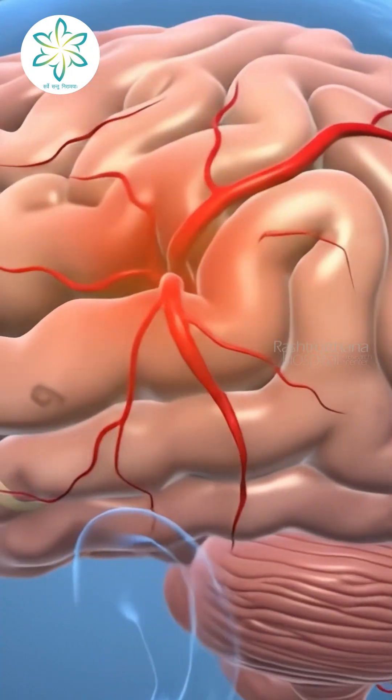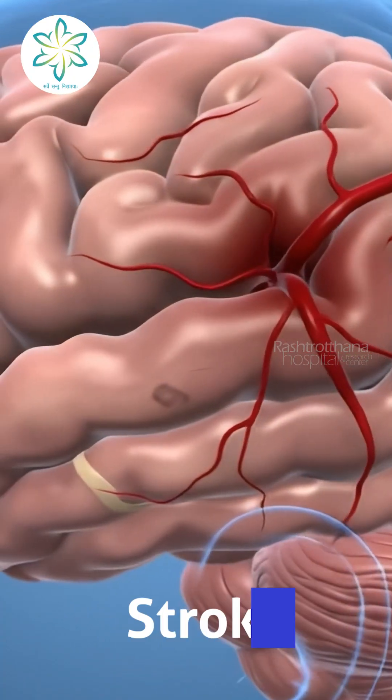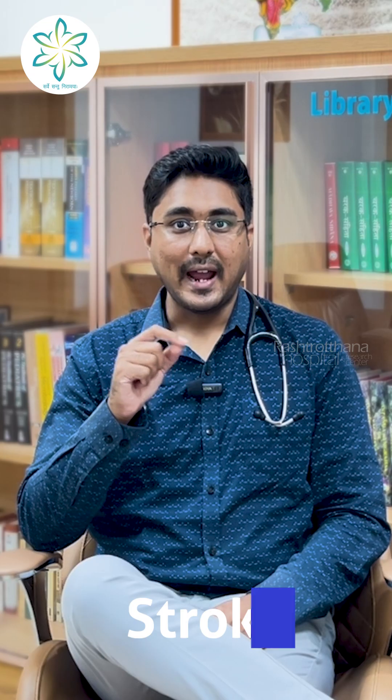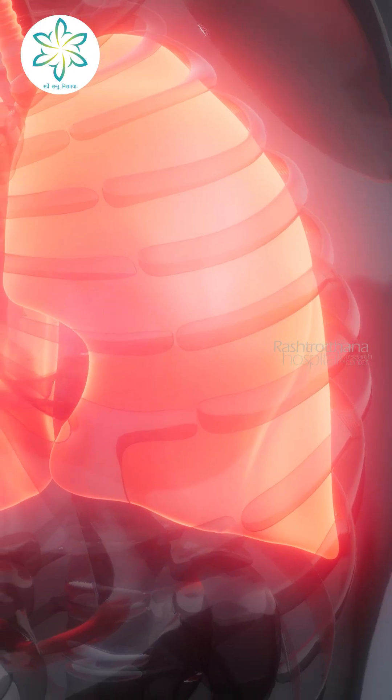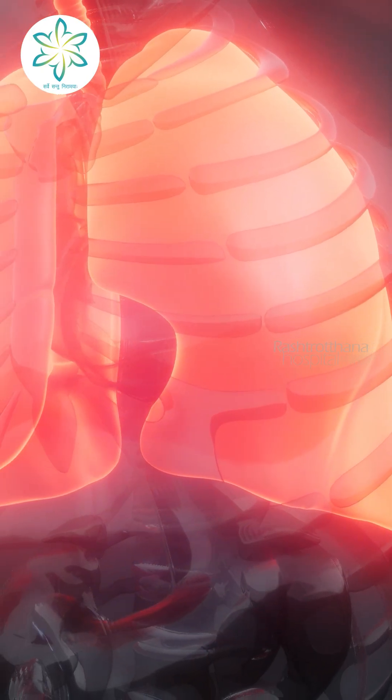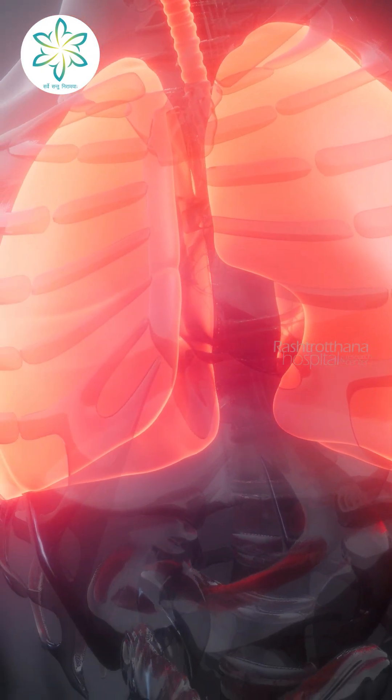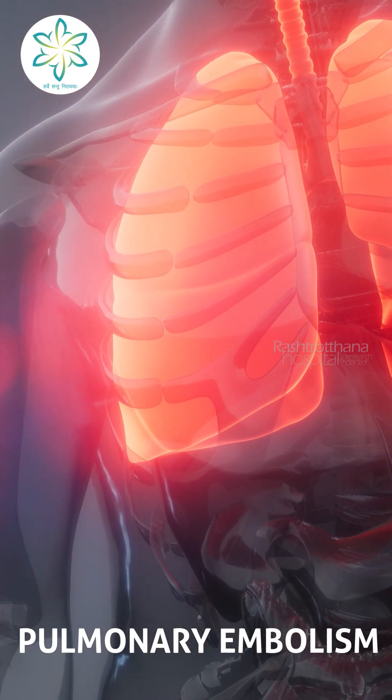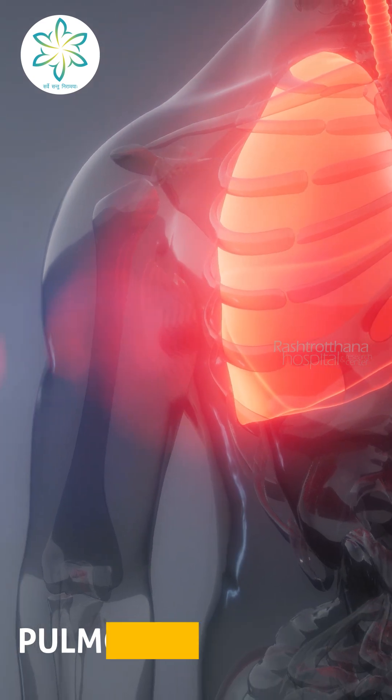If the same blockage occurs in the blood vessel of the brain, we call it a stroke. And if the blood vessel supplied to the lungs gets blocked, we call it pulmonary embolism — or you can think of it as a lung attack.